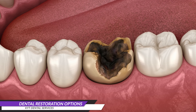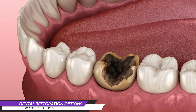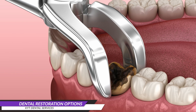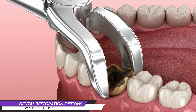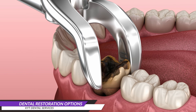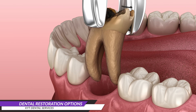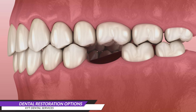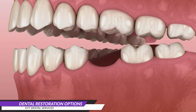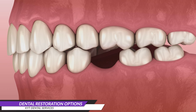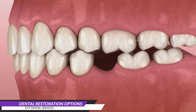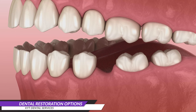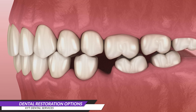In cases where there is no remaining healthy tooth structure to achieve good restoration outcomes, the tooth will need to be extracted. After a tooth is extracted, it is essential to consider appropriate non-removable tooth replacement options to prevent mesial drifting.